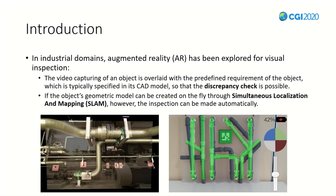In the AR field, it is an important problem to understand the surrounding spatial information precisely. In some cases, problems can be solved based on predefined markers. However, if space information can be obtained in real-time through the SLAM algorithm, this discrepancy check can be automated.